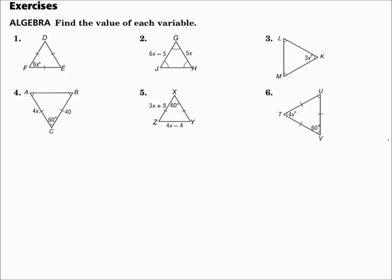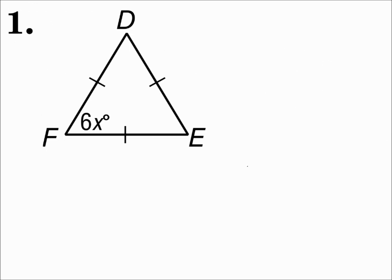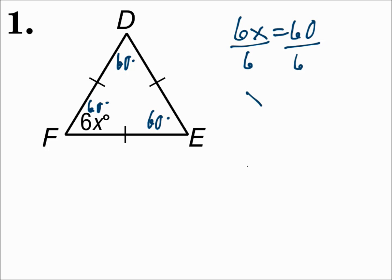Find the value of each variable. Number one: this is an equilateral triangle because all sides are congruent. When all sides are congruent, all angles are congruent and those angle measures are all 60 degrees. So if one angle is also labeled 6x, then 6x equals 60. Divide each side by 6 and x is 10.